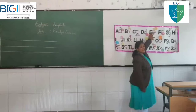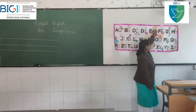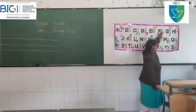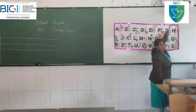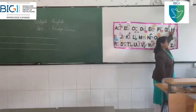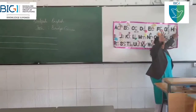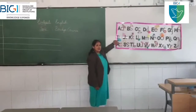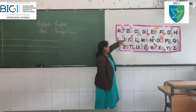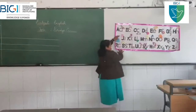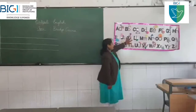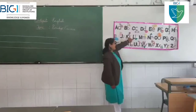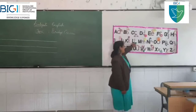D is for dice. E is for elephant. F is for fun. G is for gun. H is for hat. I is for igloo. J is for jug. K is for kite. L is for lion.